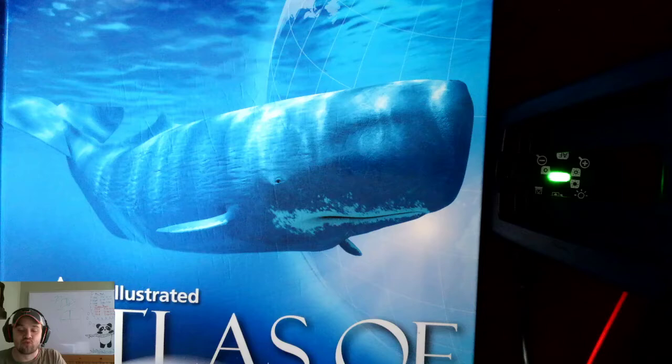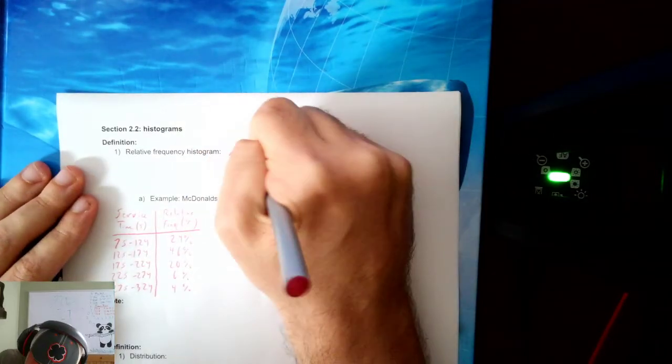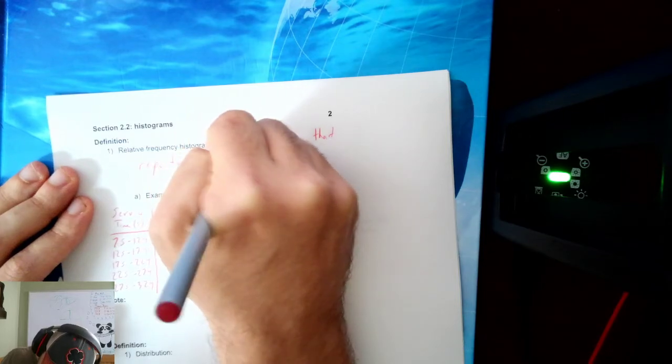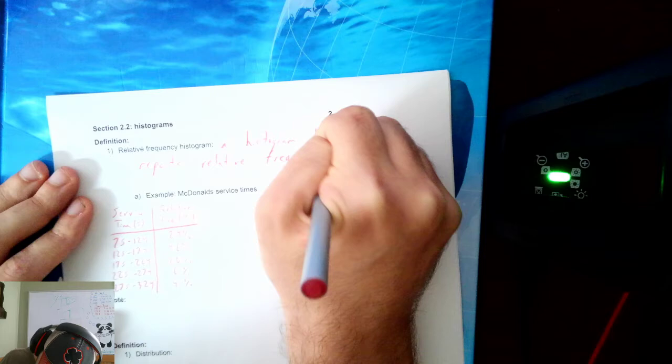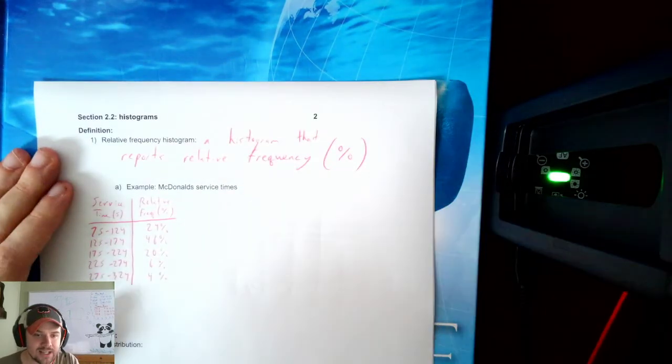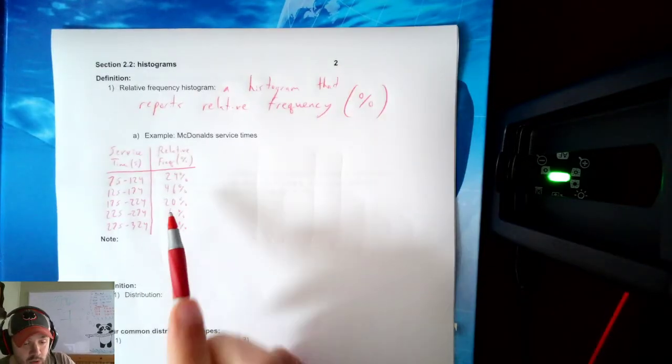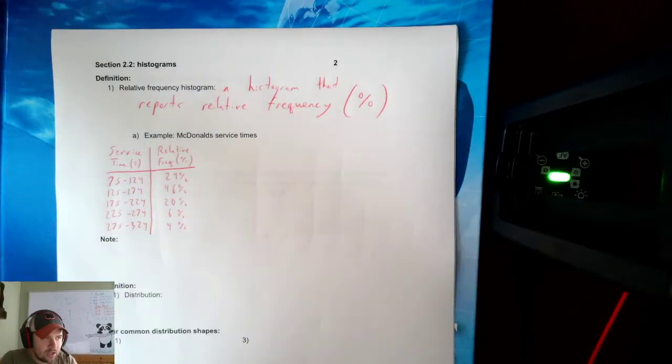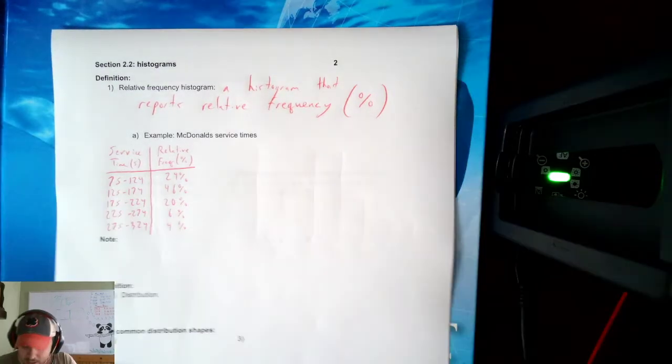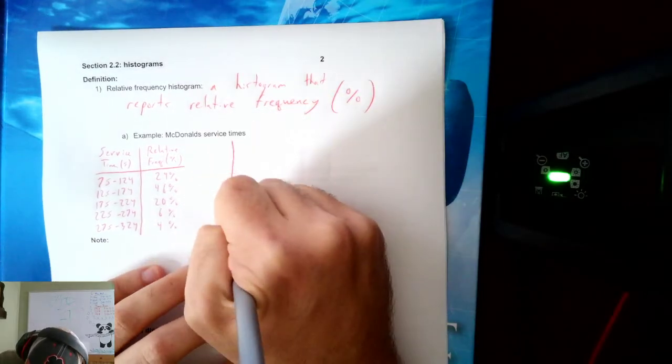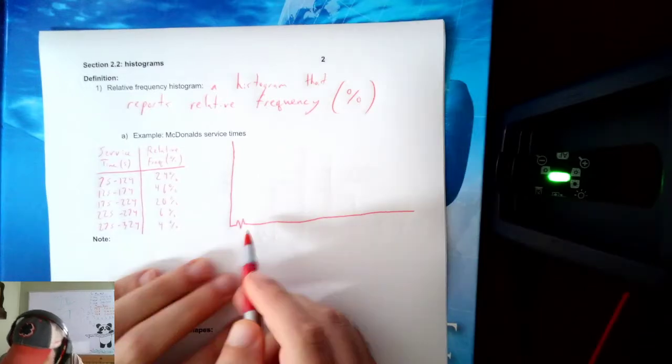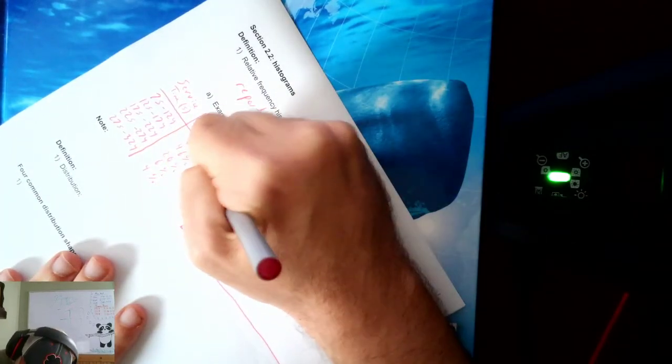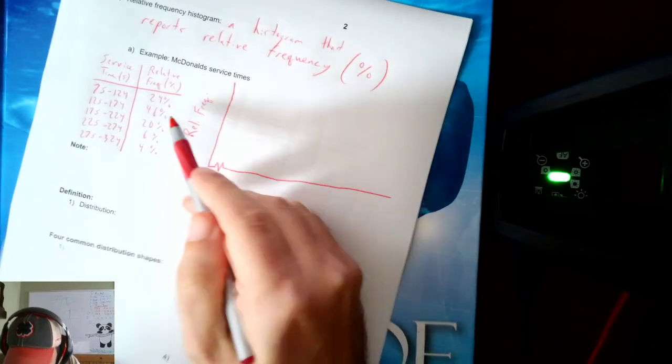Now, there's also what's called a relative frequency histogram, and this is a histogram that reports relative frequency. Which, if you remember, the relative frequency is percentages. It's a histogram that reports relative frequency. So here is our relative frequency table from last section. We've already seen this table. Let's take a look at the histogram.